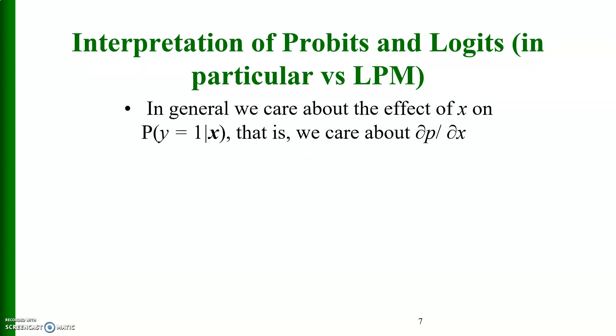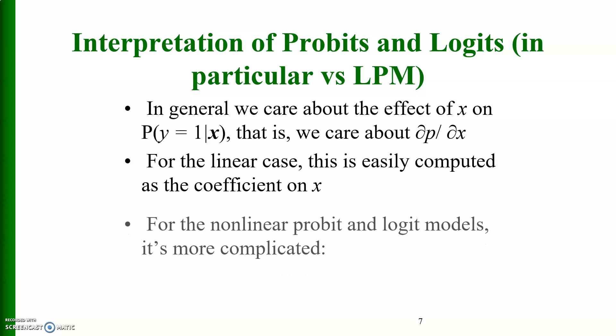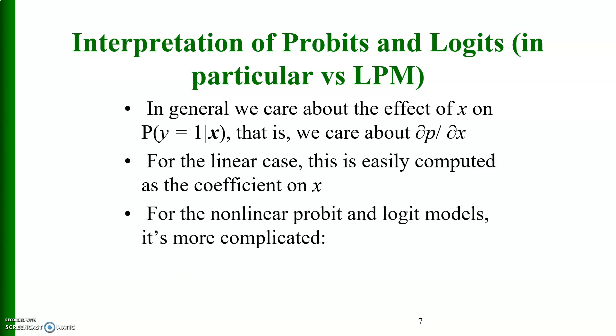Interpretation of the probits and logits, in particular versus linear probability model. In general, we care about the effect of x on probability of y equals 1 given x. That is, we care about the partial of p with respect to 1 unit change in x given all other variables constant. For the linear case, this is easily computed as the coefficient on x. For the non-linear probit and logit models, it is more complicated and it is given like this.